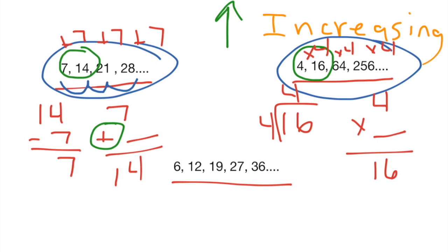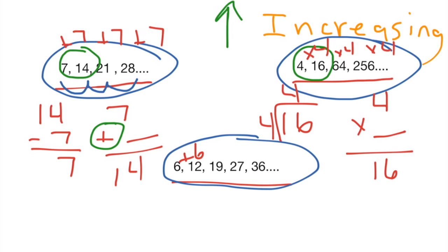Make sure that your rule is working for every step in your pattern. A third type of increasing pattern is one where something changes every time — maybe you're not adding or multiplying by the same number every time. An example here would be: to get from 6 to 12 you add 6, so you might think the rule is plus 6. But you have to make sure it works every single time. To get from 12 to 19 you actually add 7, from 19 to 27 you add 8, and from 27 to 36 you add 9. So the pattern here is adding one more number each time: plus 6, plus 7, plus 8, plus 9. That is a different type of pattern because we're not just adding the same thing every time.